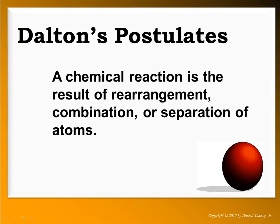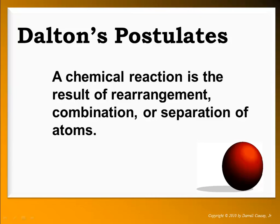His fifth postulate stated that a chemical reaction is the result of the rearrangement, combination, or separation of atoms — and that's really true. A chemical reaction involves the breaking apart of bonds and rearranging atoms to give us new products. So Dalton's postulates led to an idea for the first atomic theory. His idea of the atom was pretty simple: the atom is a tiny, indivisible, indestructible particle, and all matter is made up of atoms. This was known as the solid sphere model.